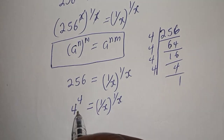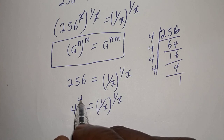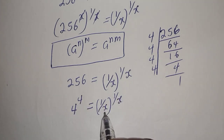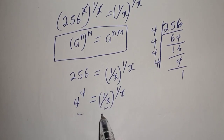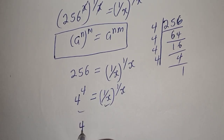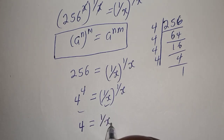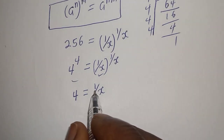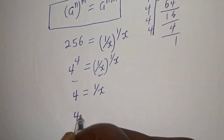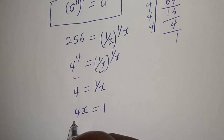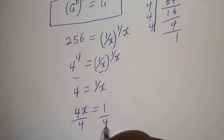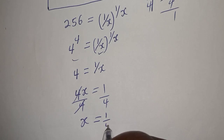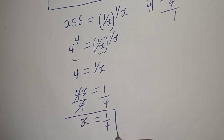From here you can see that the exponent 4 equals 1 over S, and the base 4 also equals 1 over S by comparison. So therefore 4 is equal to 1 over S. Since we are looking for the value of S, let's cross multiply: 4S is equal to 1. Dividing both sides by 4, S is equal to 1 over 4. This is the final answer.